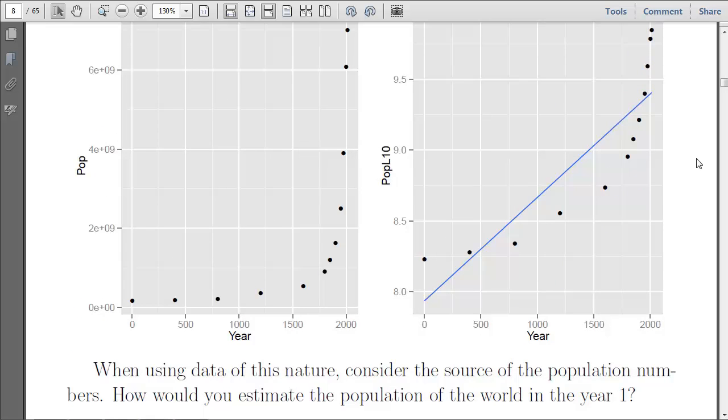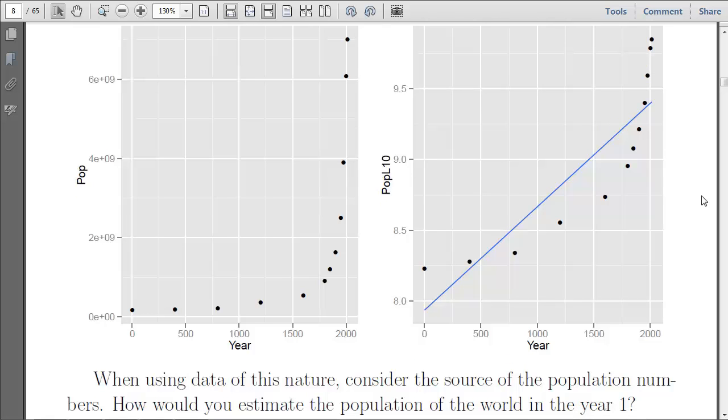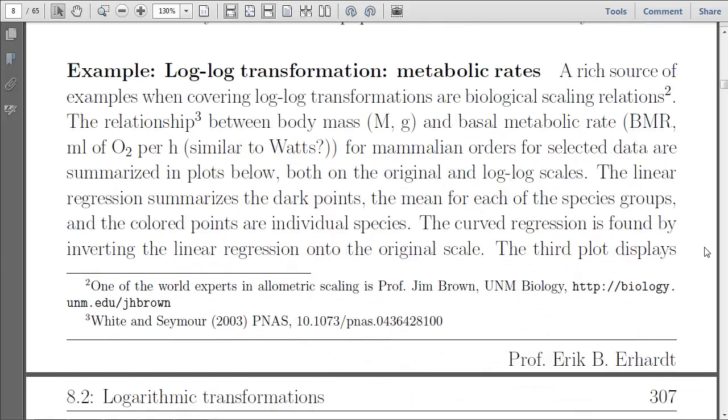One note about this is when you're using data like this, what is the source of information we're using to get those population numbers? For example, how do we know what the world population was in year zero or year one? No one was taking a census of the whole world back then. So these points are estimated, and you may think a little bit about how much you need to worry about the quality of those estimations. I'm not going to question those right now, but in your own work, and when you think about the work of others, always be thinking about the data measurement process. How did they get this value? Is it even possible to measure that? In the model that they probably used, are their model assumptions met? All sorts of questions come up.